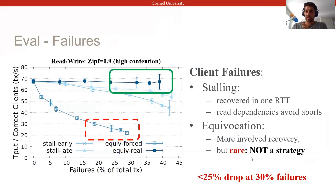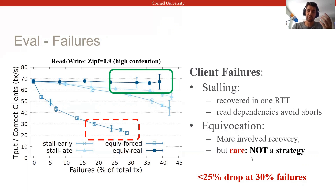Dealing with equivocation is more involved and costly, and in the highlighted section we evaluated an artificial scenario in which clients equivocate at worst case. However, Basel does not allow clients to choose the commit decision, so not only is equivocation detectable, but it is also exceedingly rare to succeed, making this strategy infeasible to pursue in practice.